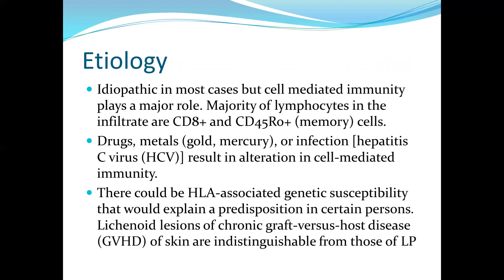In terms of etiology, most cases are idiopathic. However, the known pathogenesis is that cell-mediated immunity plays a major role; the majority of lymphocytes in the infiltrate are CD8+ and CD45 memory cells. Drugs, metals such as gold and mercury, or infections such as hepatitis C virus can result in alteration of cell-mediated immunity, predisposing to lichen planus development. There may also be associated genetic susceptibility. Lichenoid lesions of chronic graft-versus-host disease of skin are indistinguishable from those of lichen planus.